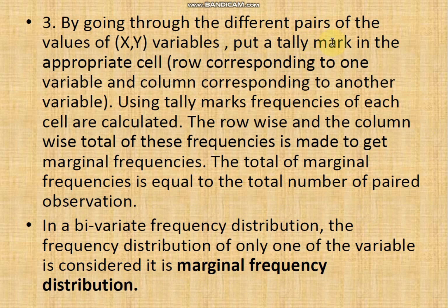By going through the different pairs of values of x and y, put the tally mark in the appropriate cell. When the data is given, x and y values are given side by side. You look at the x and y values, relate them to their respective class intervals, and put a tally mark in the appropriate cell — that is, the row corresponding to one variable and the column corresponding to another.